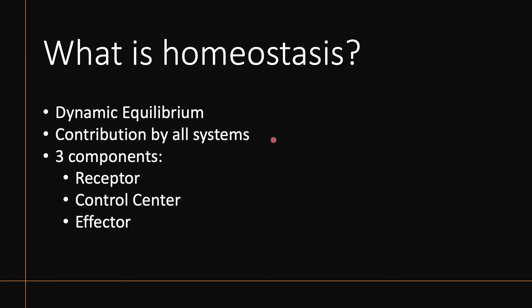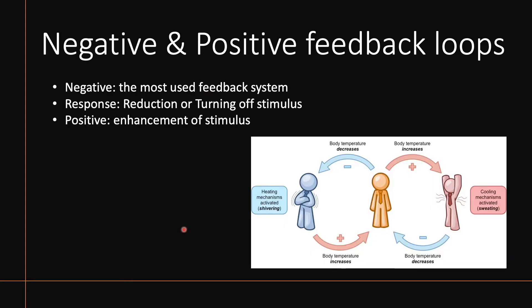There are three components to achieving or maintaining homeostasis: a receptor that picks up on a signal of something that might be off, which sends that signal to the control center, which computes the signal and decides what to do, and that decision is then sent to the effector where actions are taken — and you hopefully return to homeostasis, that equilibrium.